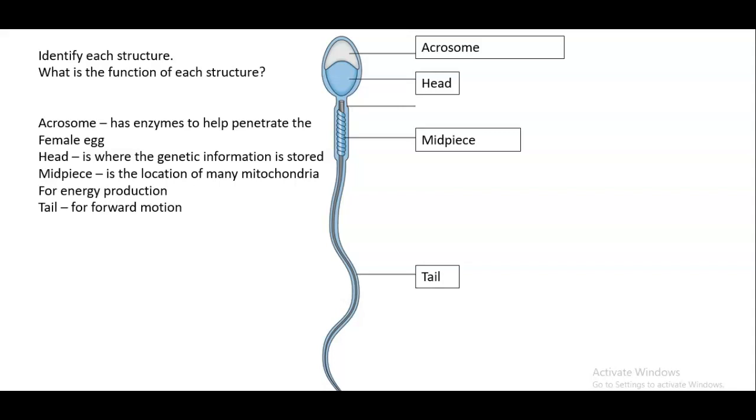And then we have the tail, which allows for locomotion. So forward motion is the goal. And here, if you can see the image, it's a very light image. What is this?